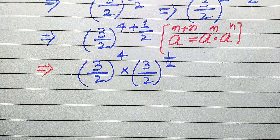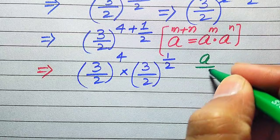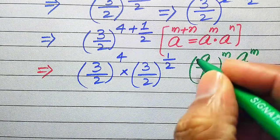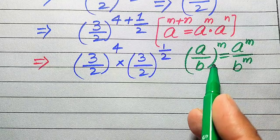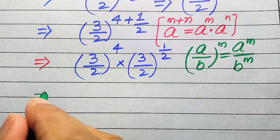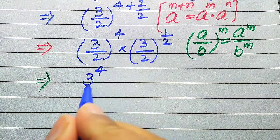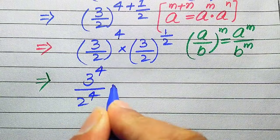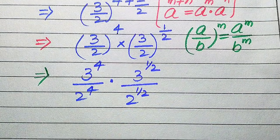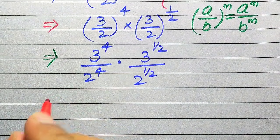We use another exponential law: (a over b) to the power of m equals a to the power of m divided by b to the power of m. Applying this law separately to both terms, we apply the exponent 4 and the exponent 1 over 2 separately to numerator and denominator of each term.